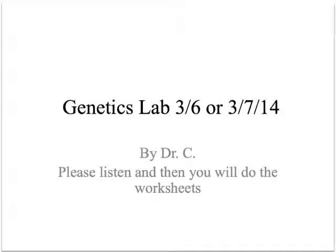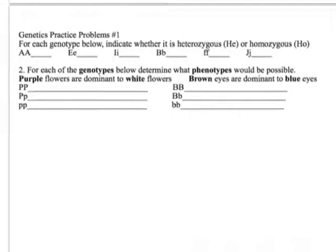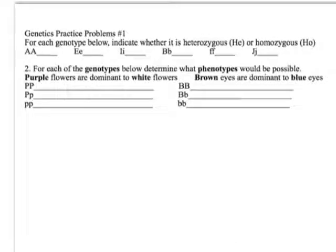Hi everyone, I'm going to do a presentation. We are now on the first page of the tutorial. The first problems require you to identify whether genotypes like uppercase AA or uppercase-lowercase are homozygous or heterozygous. Homozygous means they have the same letters and thus the same trait, because we're looking at genes.